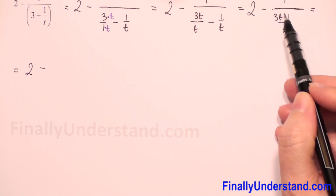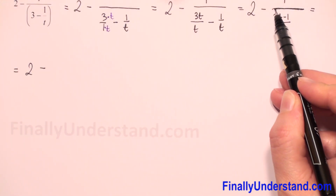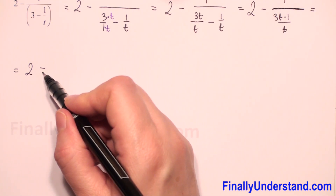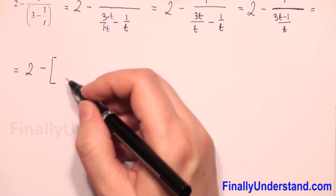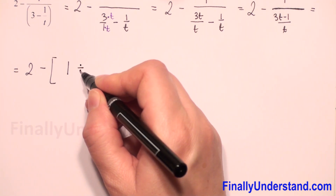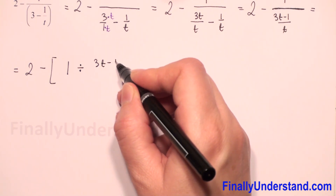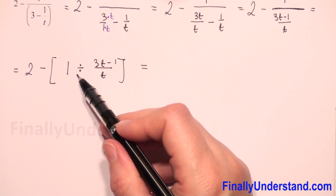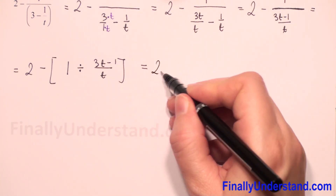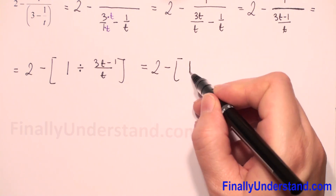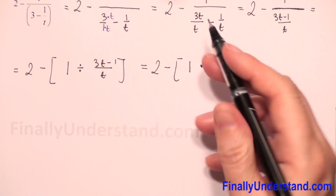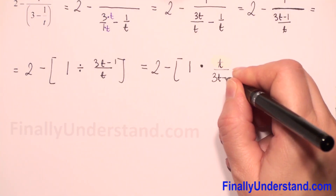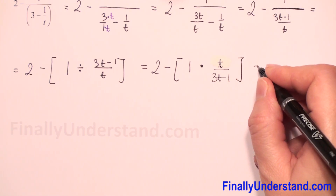This main fraction bar means division, because we cannot do anything at that moment in the numerator. We can change this fraction bar to division. Because we have negative signs, I open the brackets and we have 1 divided by 3t minus 1 over t, close brackets. Now we will change division to multiplication: we copy the brackets and we have 1 times, and we flip the fraction to t over 3t minus 1, close brackets.